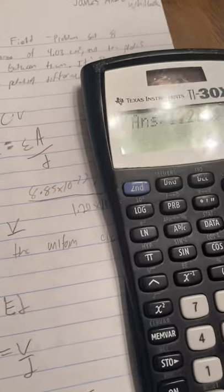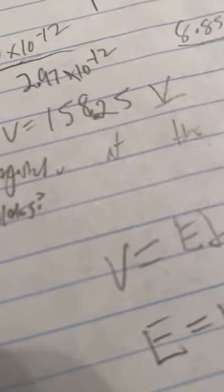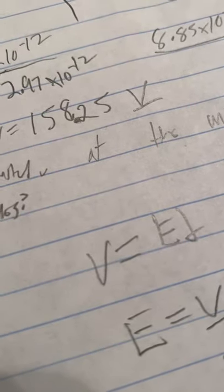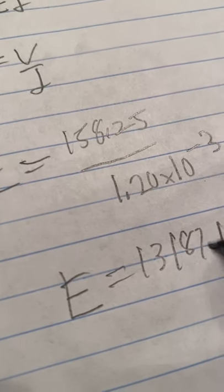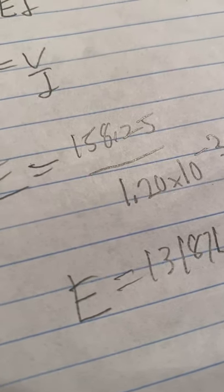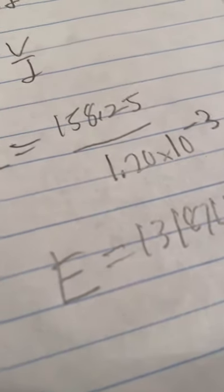And we already have that in there, so we'll just divide that by 1.2 e to the negative third. And that gives us the electric field, and the units for that is volts over meters.